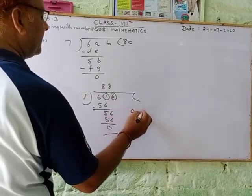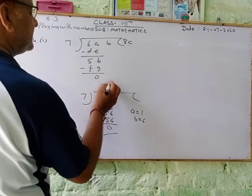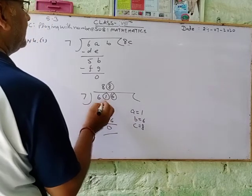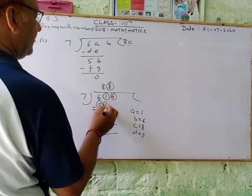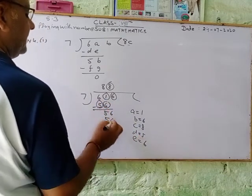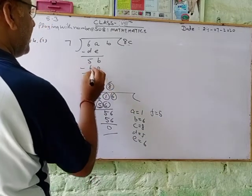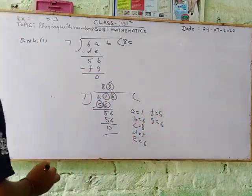A equal to 1, B equal to 6, and C equal to 8, and D equal to 5, E equal to 6, F equal to 5, and Z equal to 6. We get an answer.